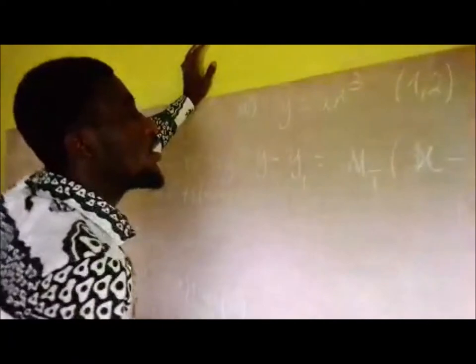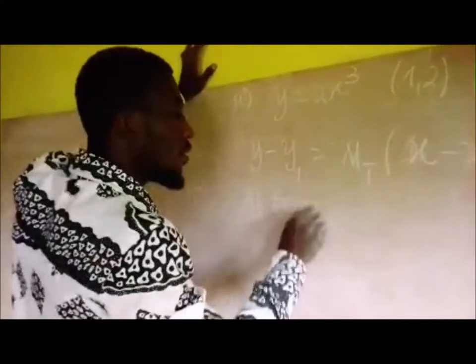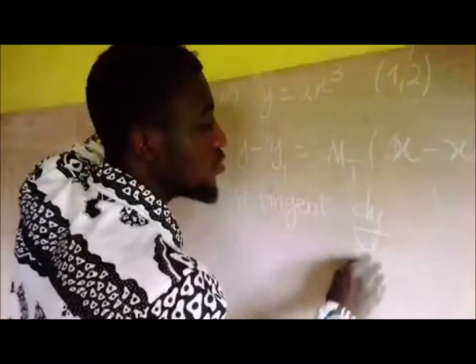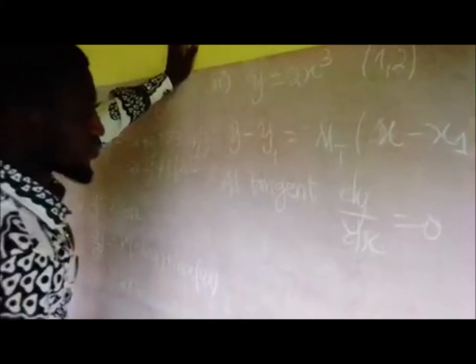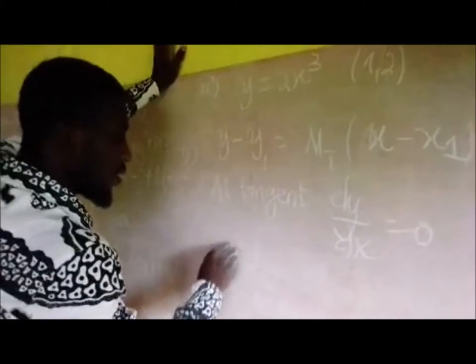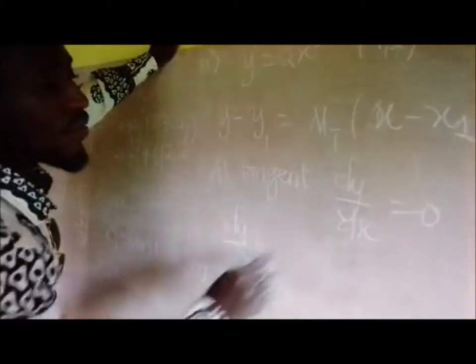So at the tangent, what happens—we have dy/dx equals to 0. This therefore means that we are going to have here dy/dx. No, rather, sorry.